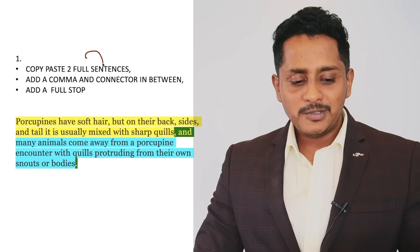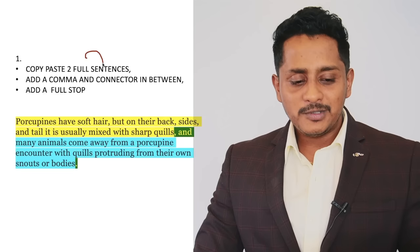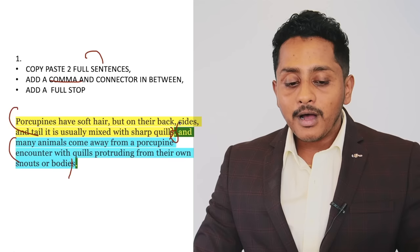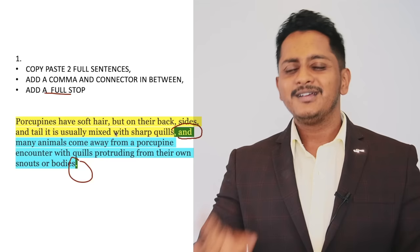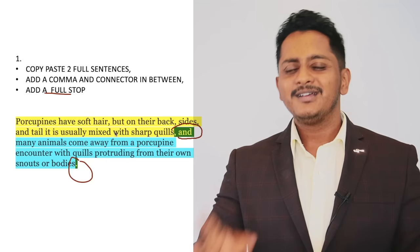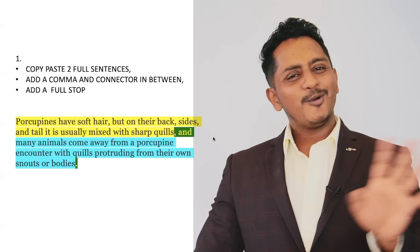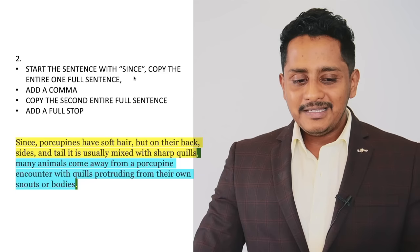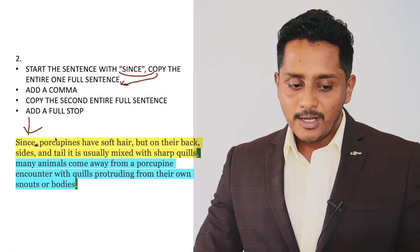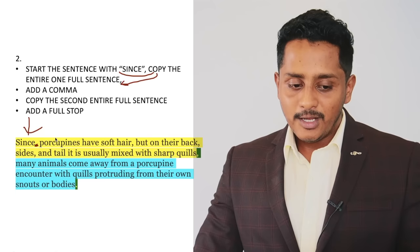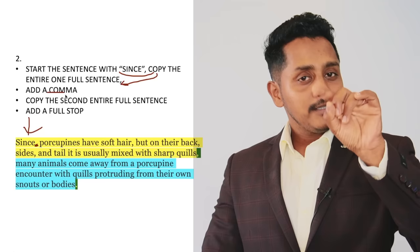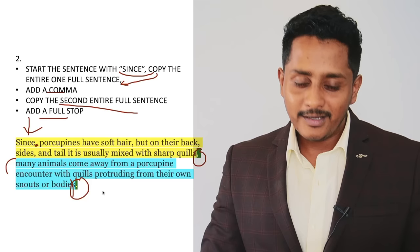Now let's talk about strategy number one. Copy-paste two full sentences: first sentence, second sentence, add a comma and a connector in between, then add a full stop. Do you need 10 minutes for this? Finish it in one minute and go to the next question. For strategy number two: start the sentence with the word 'since' — no comma required after 'since.' Copy the entire first full sentence, add a comma where the full stop was, then copy the entire second full sentence, add a full stop. That is all strategy two is about.